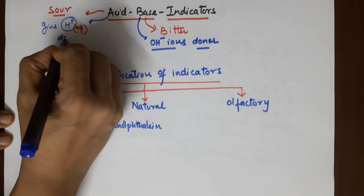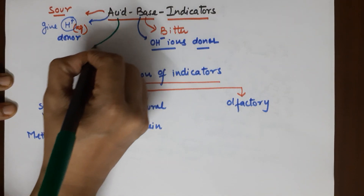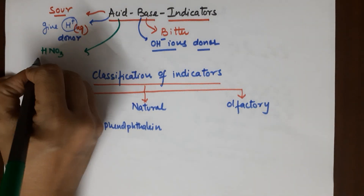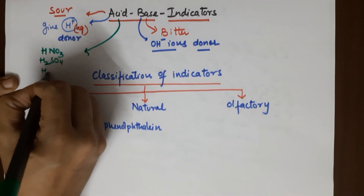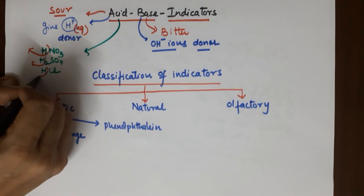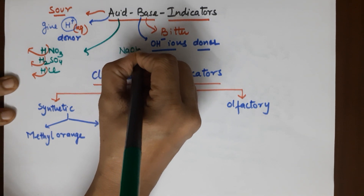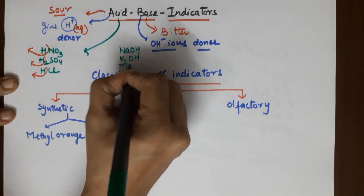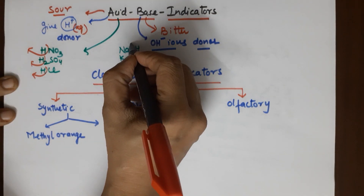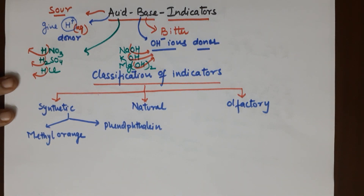When we talk about acids, common examples are nitric acid, sulfuric acid, and HCl — they have a tendency to give off H⁺ ions. For bases, examples include NaOH, KOH, and Mg(OH)₂ — metal hydroxides are basic in nature and give off OH⁻ ions.